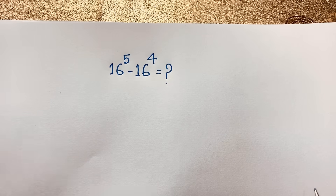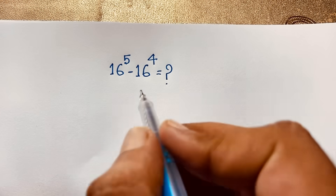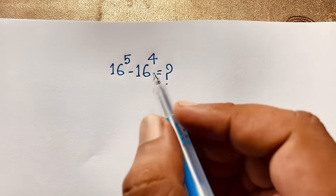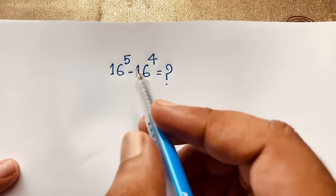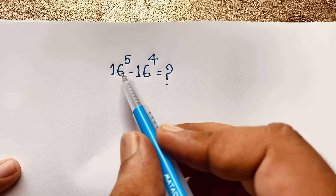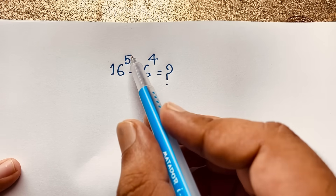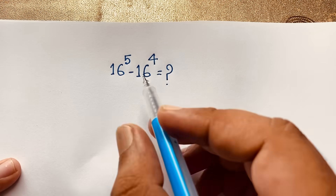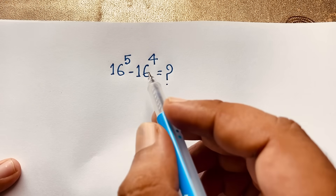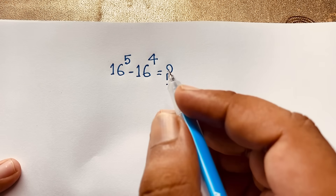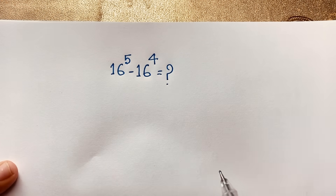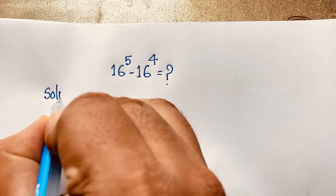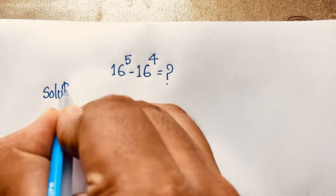Hello everyone, welcome to the classroom. Today we have solved a nice viral math olympiad question. Our question is: 16 to the power 5 minus 16 to the power 4 is equal to what? How to simplify this math problem without a calculator?